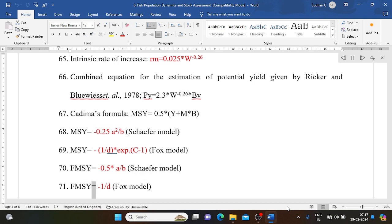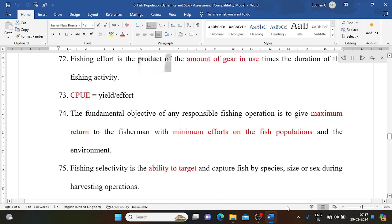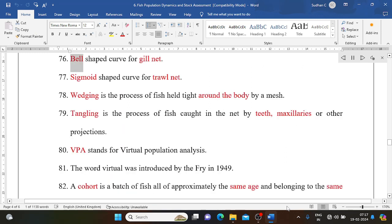F MSY equals minus 1/d for Fox model. Fishing effort is the product of the amount of gear in use times the duration of the fishing activity. CPUE equals yield/effort. The fundamental objective of any responsible fishing operation is to give maximum return to the fishermen with minimum efforts on the fish populations and the environment. Fishing selectivity is the ability to target and capture fish by species, size, or sex during harvesting operations.